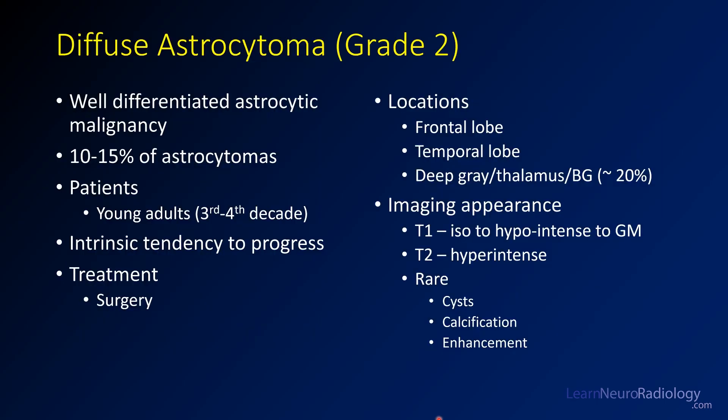So in this case, what you're dealing with is a grade 2 diffuse astrocytoma. These are the most well-differentiated of the astrocyte malignancies, making up about 10 to 15% of astrocytomas. Unlike this patient, patients tend to be young adults in their third or fourth decades — people in their 30s and 40s. They have an intrinsic tendency to progress to higher-grade tumors. Treatment is surgery to remove as much as possible. Common locations are the frontal and temporal lobes, with the deep gray structures, thalamus, and basal ganglia being a small proportion.